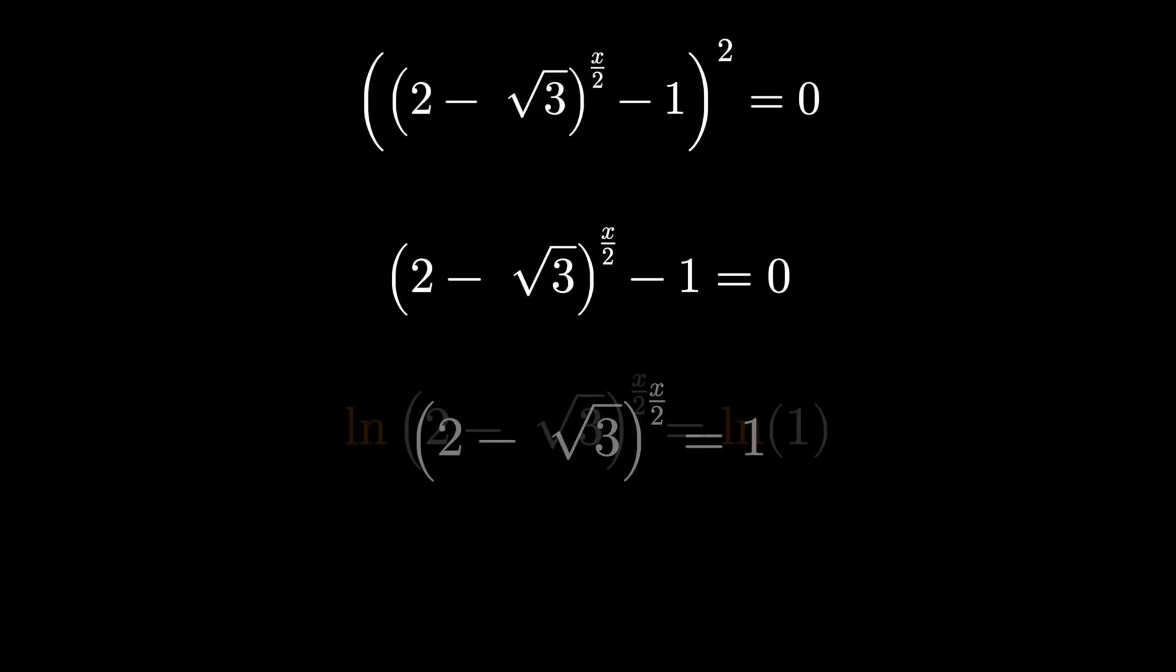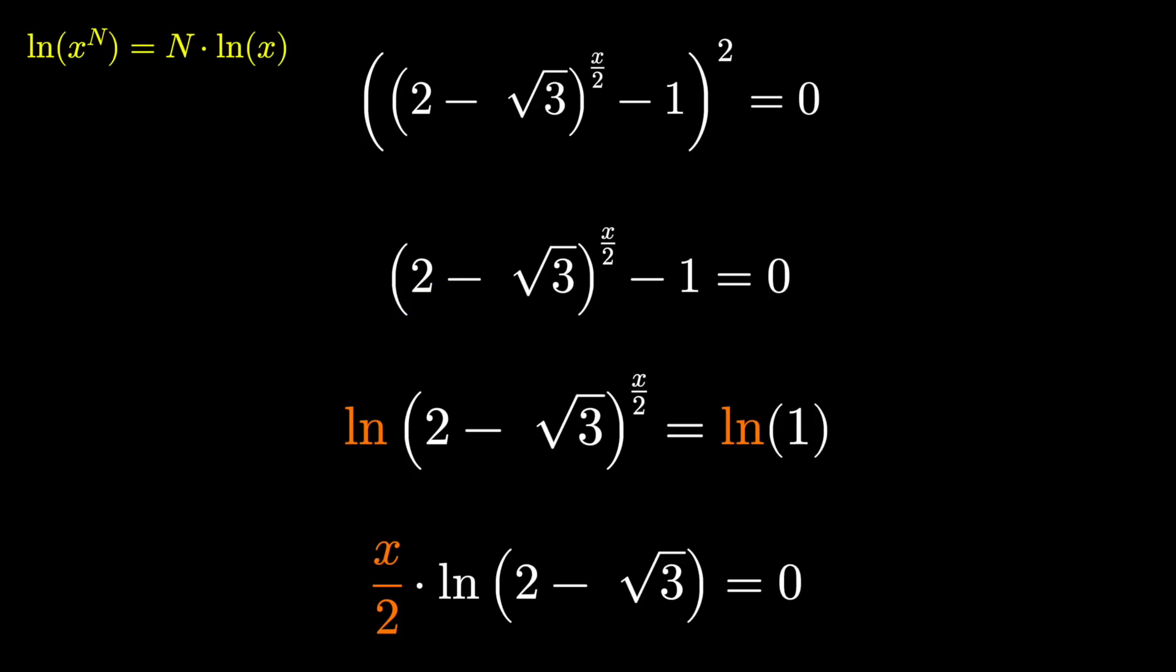We solve these by taking logarithms, let's take the log of both sides. On the right log of one is zero and on the left the reason we took the logarithm is to use those properties of logarithms. We can drop that exponent down front as a coefficient.